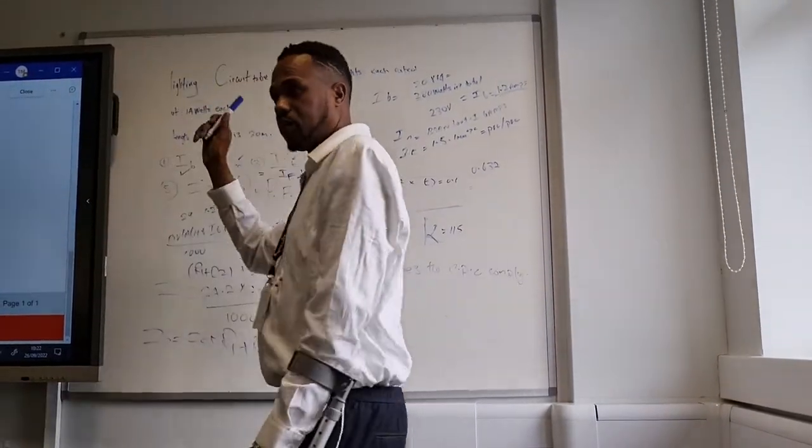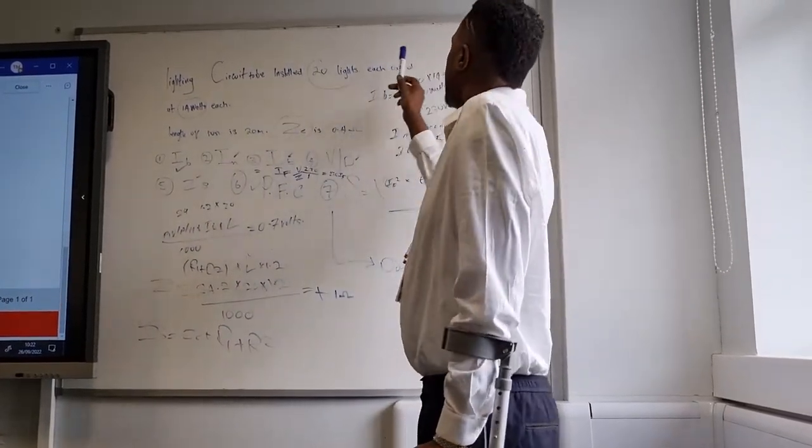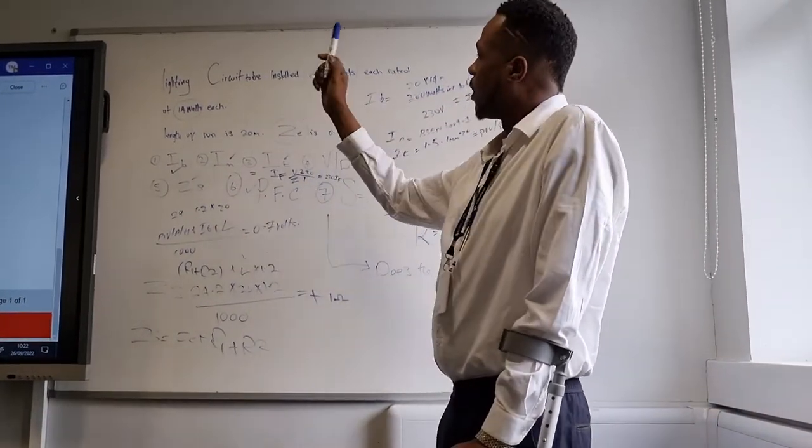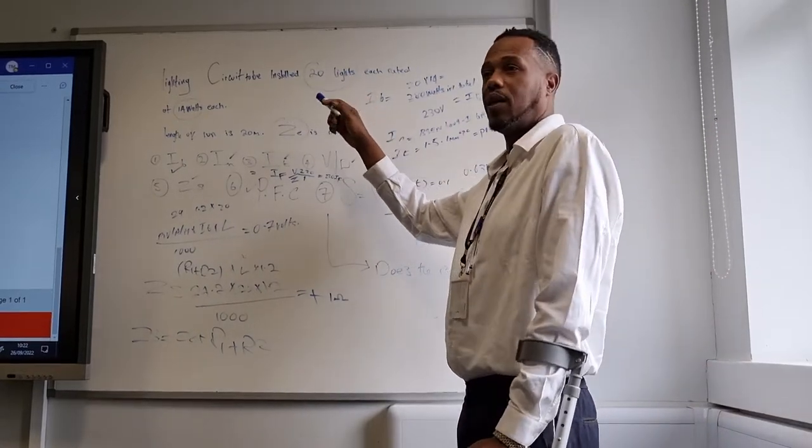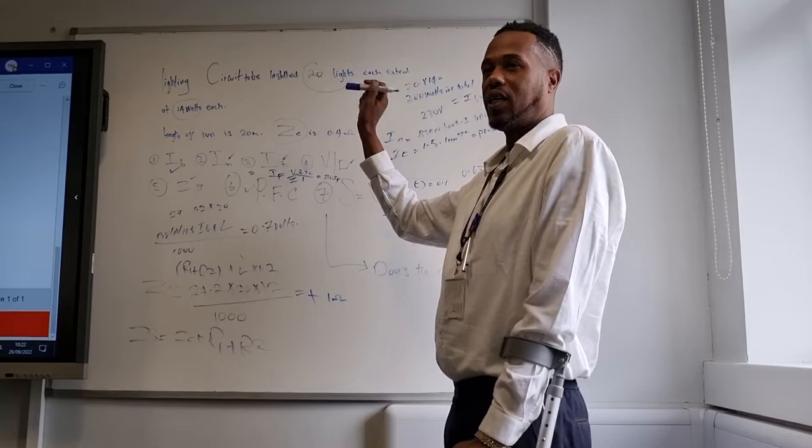Right, the lighting circuit. Last explanation. From the information that I gave you, which was lighting circuit to be installed, 20 lights, each rated at 14 watts each.